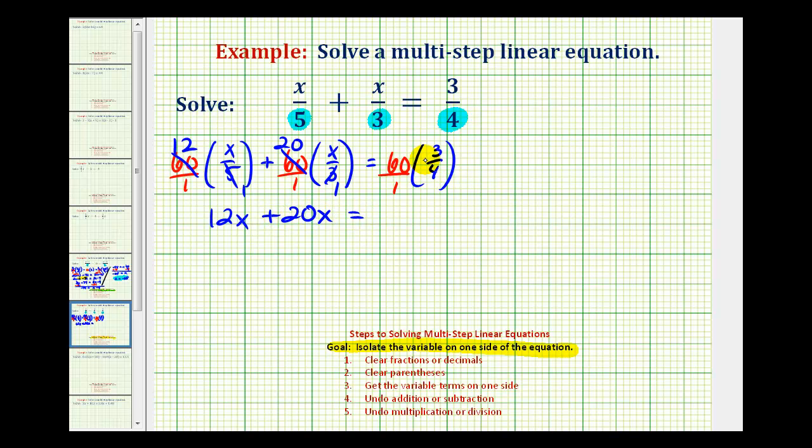here sixty and four have a common factor of four. There's one four in four, and fifteen fours in sixty. So we're left with fifteen times three, which is equal to forty-five.